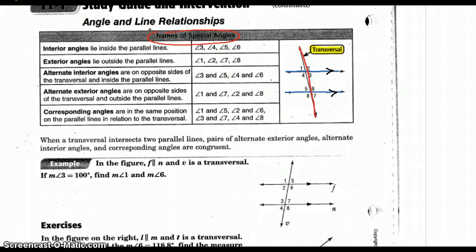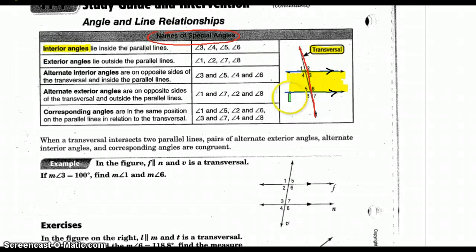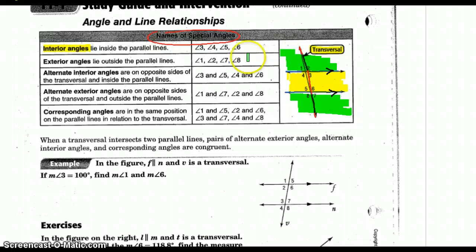I'm going to highlight the inside of the parallel lines in yellow. The angles covered in yellow are 3, 4, 5, and 6 — those are called interior angles; they're inside the parallel lines. Now highlighting outside the parallel lines in green: those are the exterior angles — 1, 2, 7, and 8.